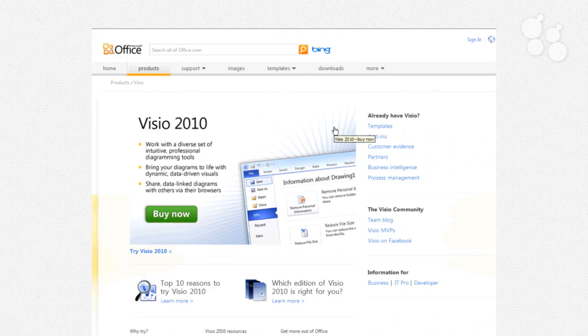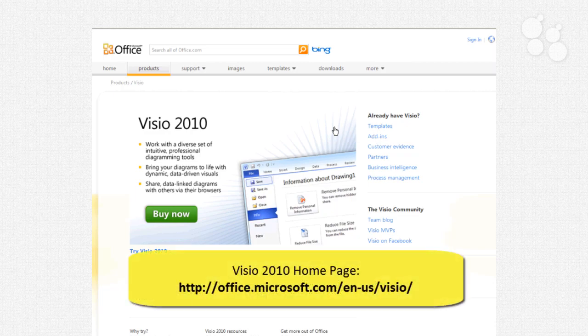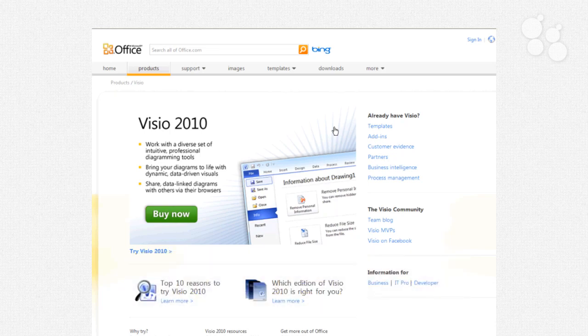Another website that you should be aware of that we'll be visiting several times throughout this training is the Visio 2010 homepage at office.microsoft.com forward slash Visio. You can always find these websites doing a simple Google or Bing search.